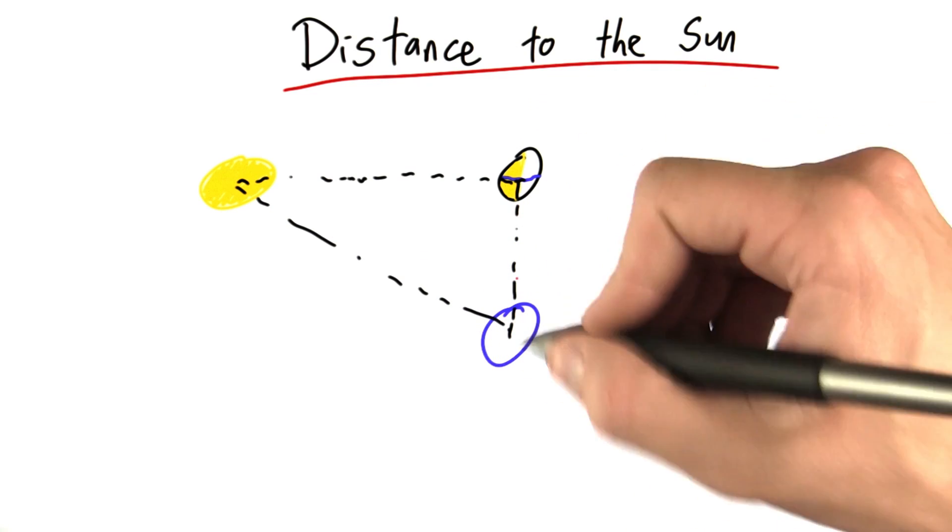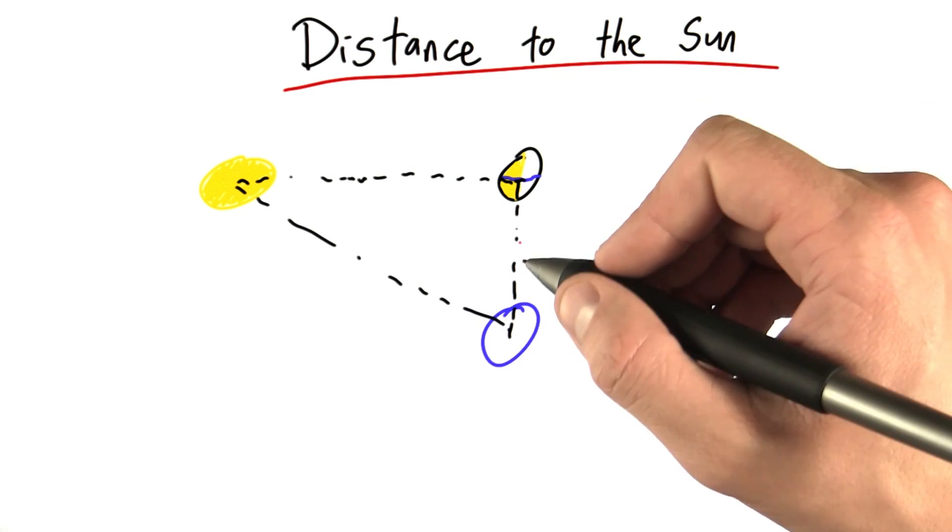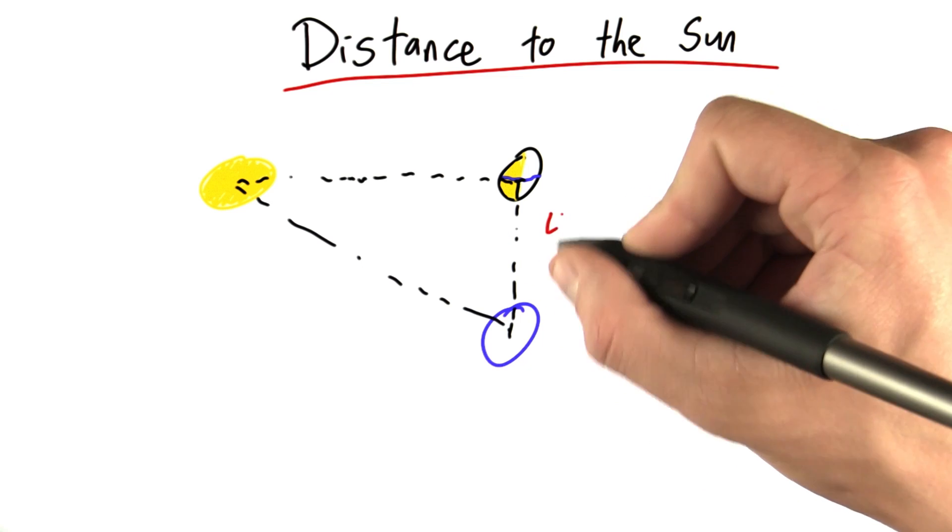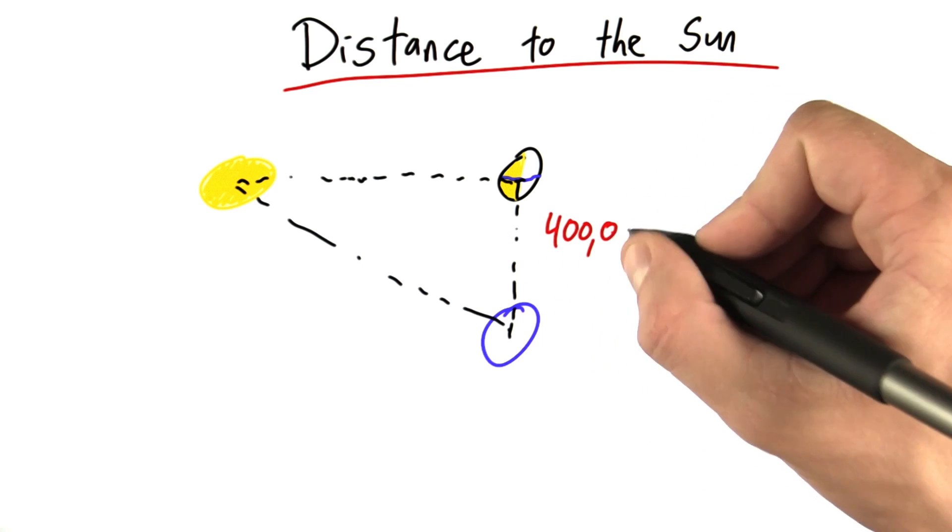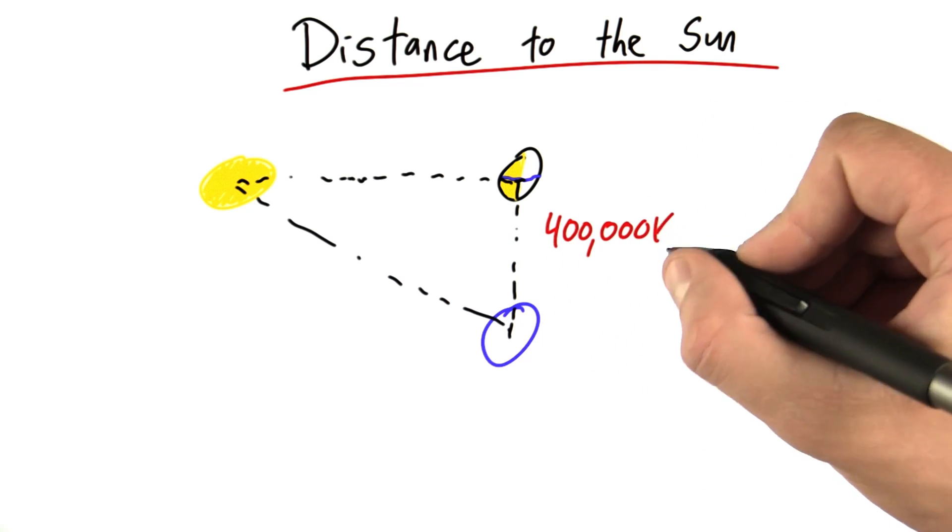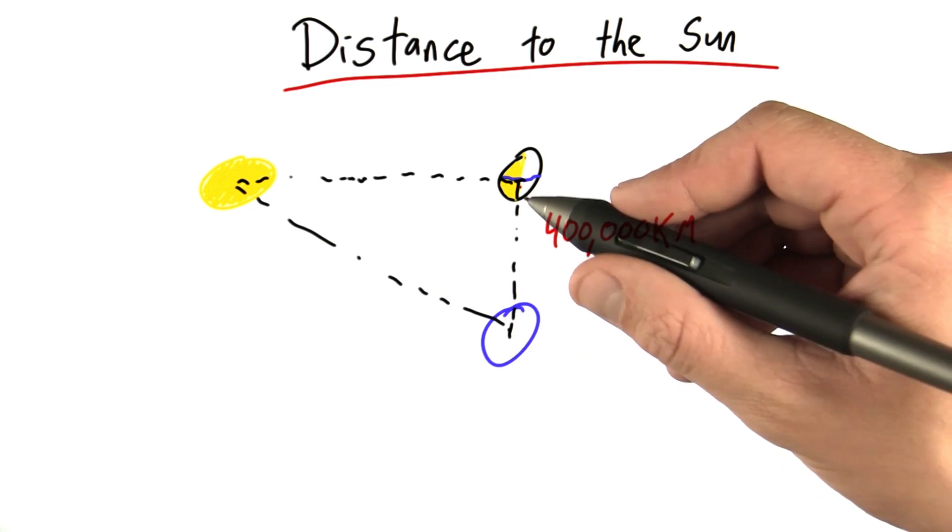In the previous problem, you calculated this distance, and I'm not going to tell you exactly what we calculated, but let's say it's very close to 400,000 kilometers. That's the distance from the Earth to the Moon.